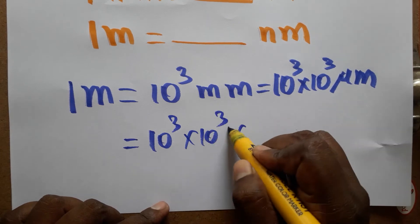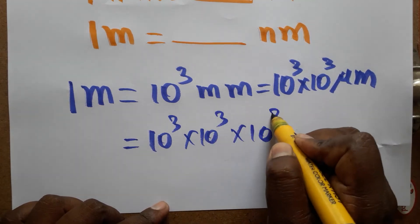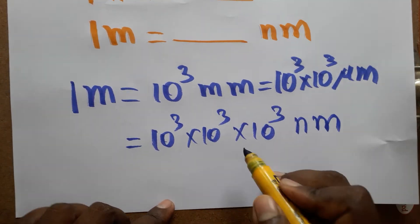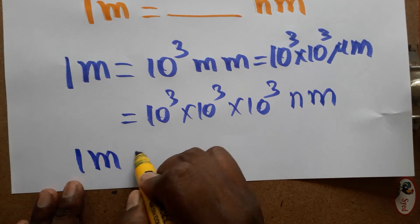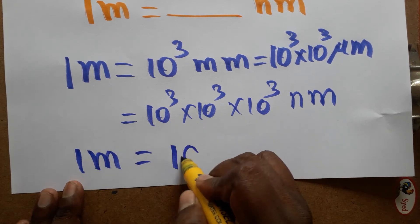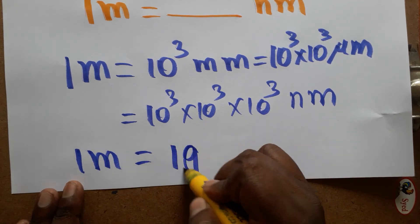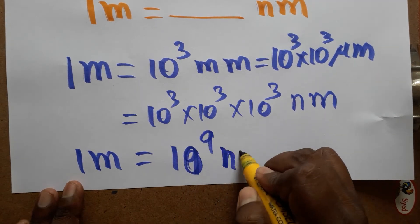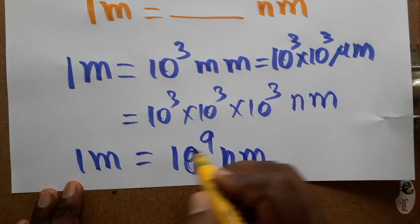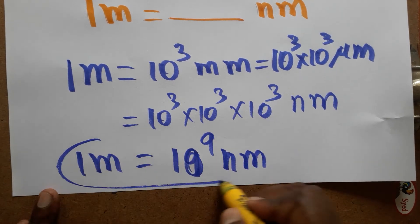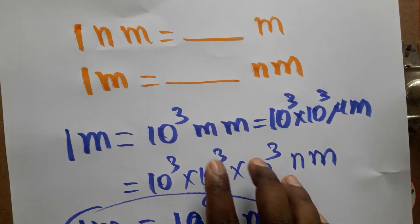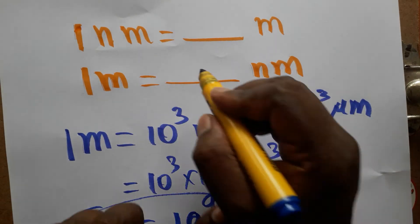So finally we get 1 meter equals 10⁹ nanometers. So 1 meter is equal to 10⁹ nanometers.